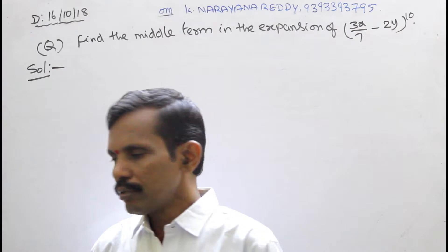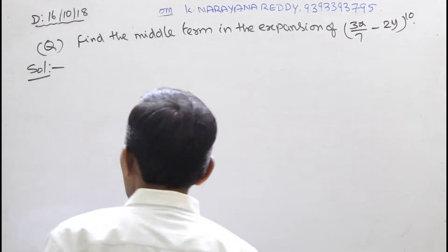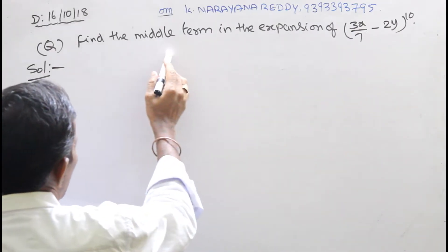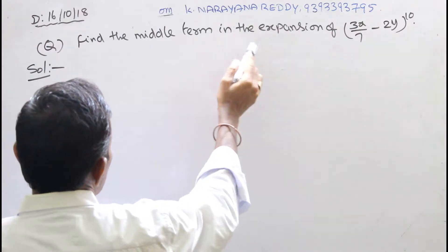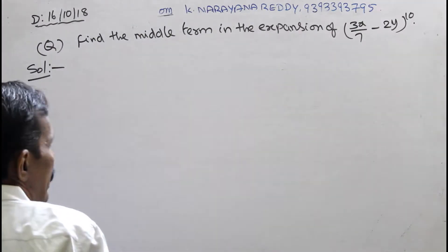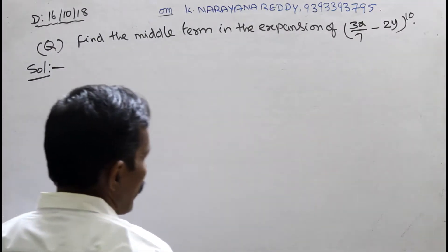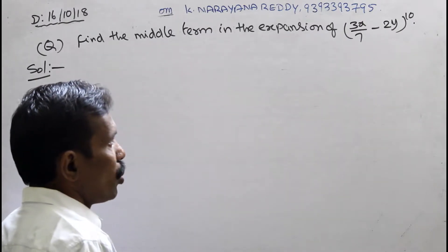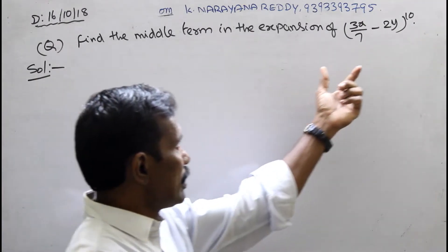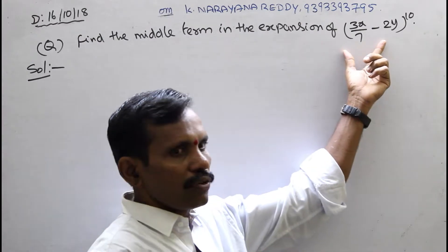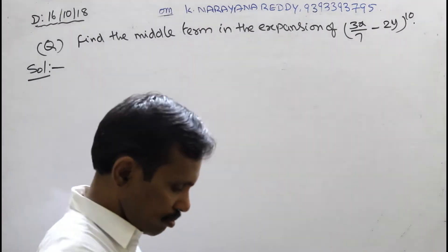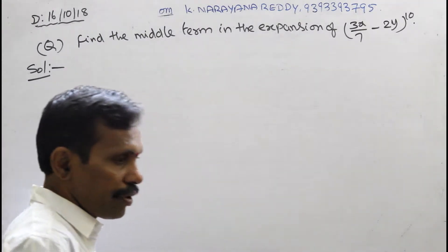See here the problem: Find the middle term in the expansion of (3x/7 − 2y) to the power of 10. In this expansion, we want to find the middle term. This is a very important problem.